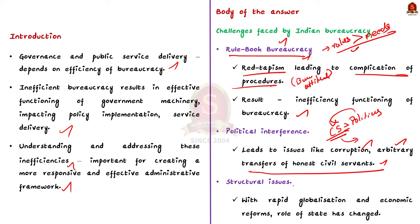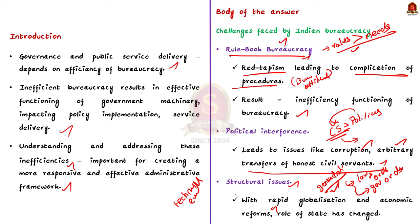The third issue is the structural issue faced by Indian bureaucracy. The Indian civil service was conceived primarily to deliver core functions of the state such as maintenance of law and order and implementation of government orders, which is why civil servants were recruited from a generalist background. However, the role of the state has changed due to globalization, economic reforms, and new challenges like technological evolution and cybersecurity. This mismatch between the generalist background and the need for specialists is the main cause of structural issues in Indian bureaucracy.